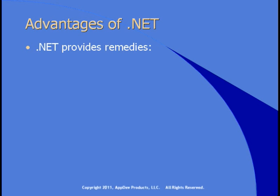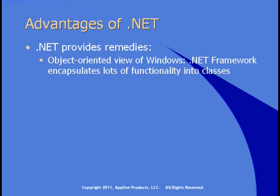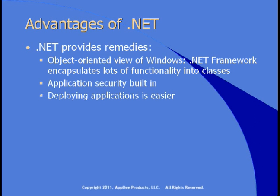.NET provides remedies for these issues. It provides an object-oriented view of Windows — the .NET framework encapsulates lots of functionality into groups of classes. Application security is built in; you don't have to worry about providing your own authentication and authorization tools. Deploying applications on the .NET framework is easier as well, because all .NET applications exist in containers called assemblies. You can deploy them without adding entries to the registry or worrying about installing other pieces. The .NET framework and your assembly is all you really need to run an application.